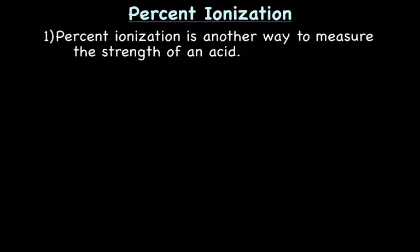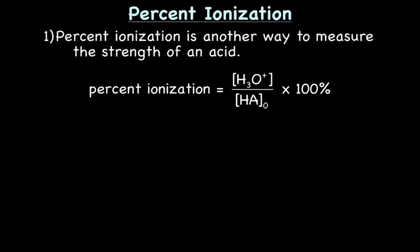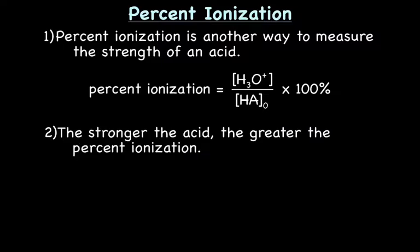Alright, last quick topic is percent ionization. So percent ionization is another way to measure the strength of an acid. So the equation for percent ionization is the concentration of H3O+, which is really the concentration at equilibrium, divided by the initial concentration of the acid times 100%. And a stronger acid is going to have a greater percent ionization.